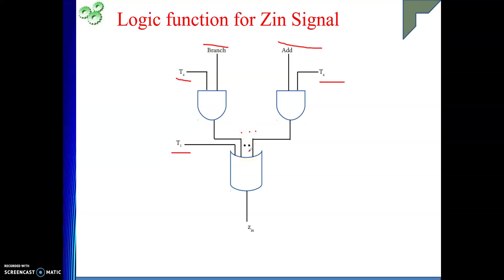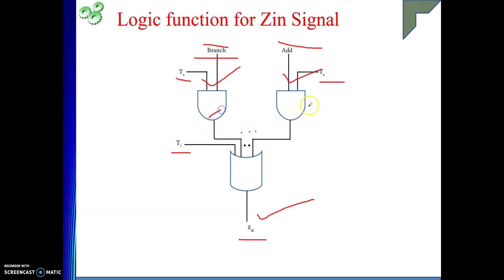If both the conditions are true simultaneously, then ZDN signal will be generated. When both of them are true, that means it is AND, then this signal will be generated. Or if these two are both true, then also — meaning ultimately I am doing an OR operation. The OR gate takes as input a number of AND gate terms, and sometimes a direct term as well. This is the logic level for your ZDN signal.